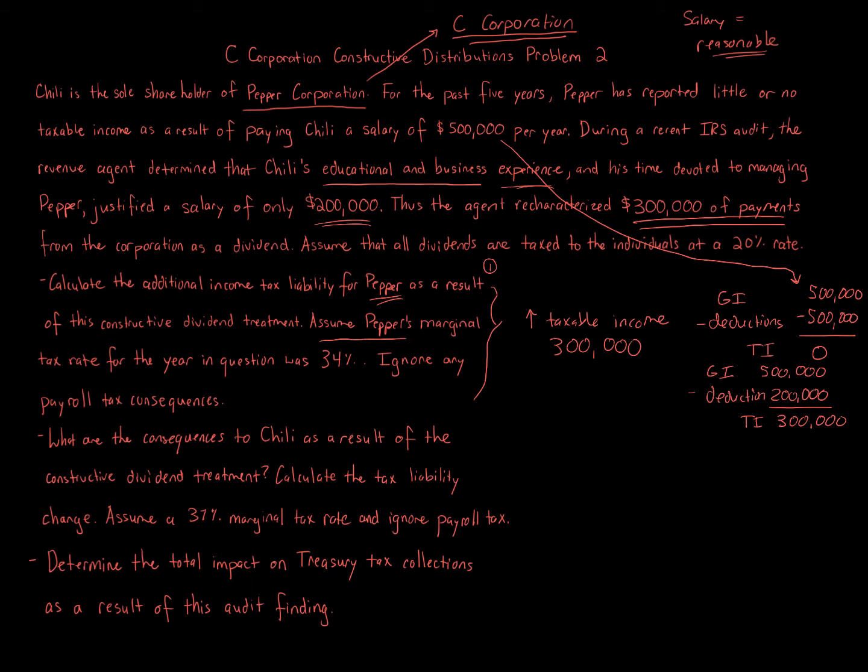Calculate the additional income tax liability for the corporation. Regardless what the numbers are, it's going to be an increase of taxable income by $300,000. We're also told to assume that Pepper, the corporation's marginal tax rate for the year was 34%. So if we take $300,000 times 34%, we get the additional tax that will be owed due to this change, and that's going to be $102,000. So the IRS basically sends a bill to the taxpayer saying you owe an additional $102,000.